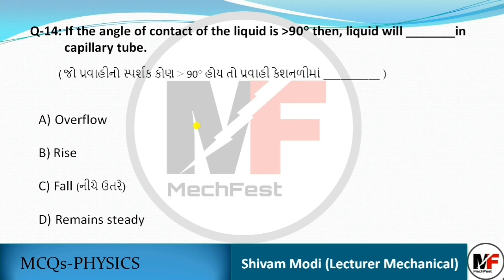If the angle of contact of a liquid is greater than 90 degrees, then the liquid will fall in the capillary tube — meaning the liquid level goes down (fall).